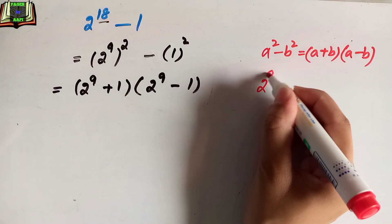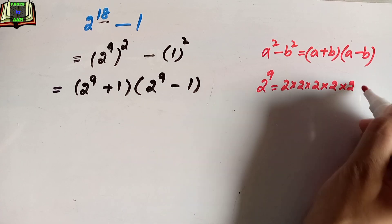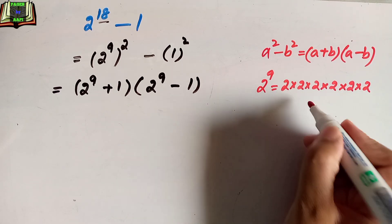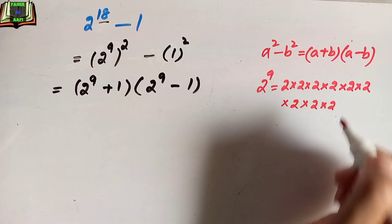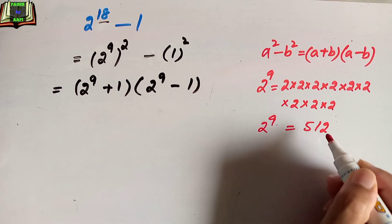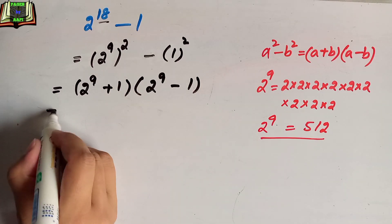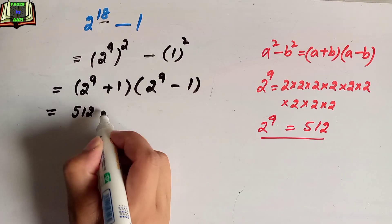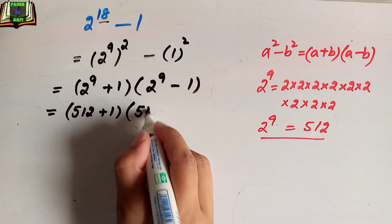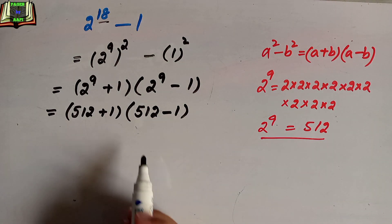We will now simplify 2 to the power 9. This means 2 multiplied by itself 9 times, which equals 512. So the expression becomes (512 + 1) into (512 − 1).